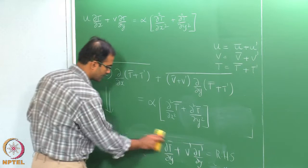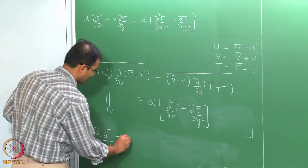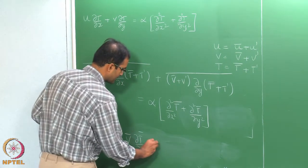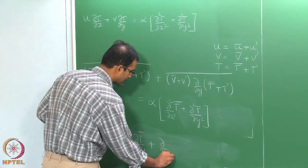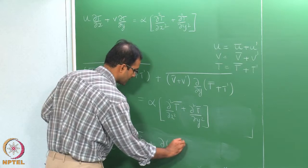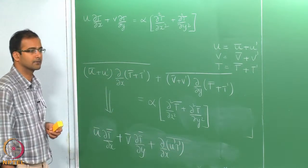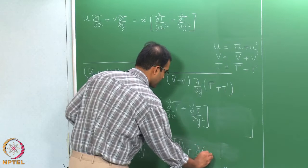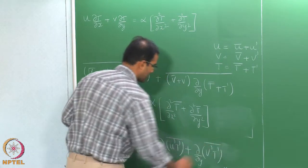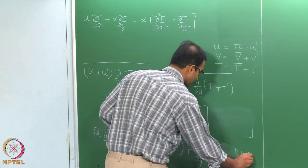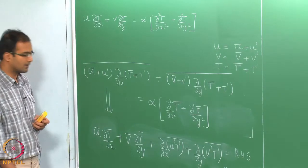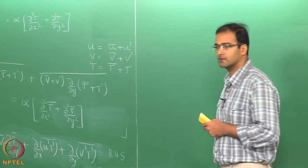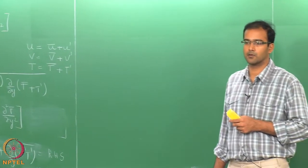Essentially on the left-hand side you will have V-bar dT-bar/dy, plus d/dx of (U-prime T-prime bar), plus d/dy of (V-prime T-prime bar) equal to the right-hand side. So let us now summarize the entire set of RANS equations — momentum and energy together.